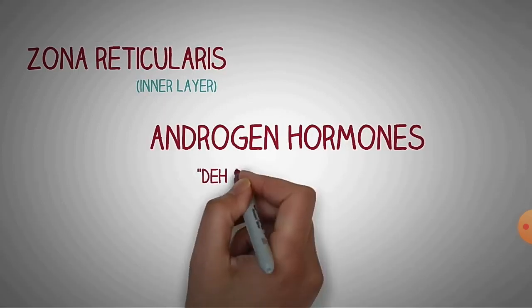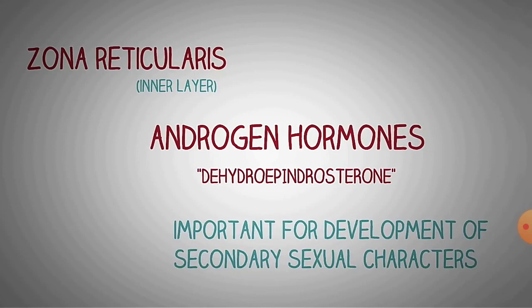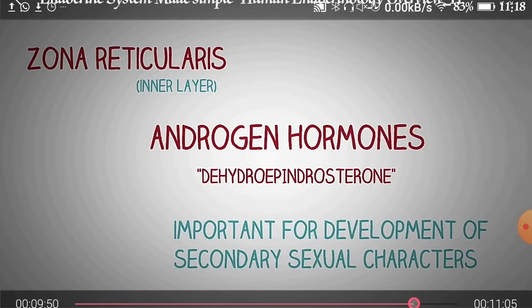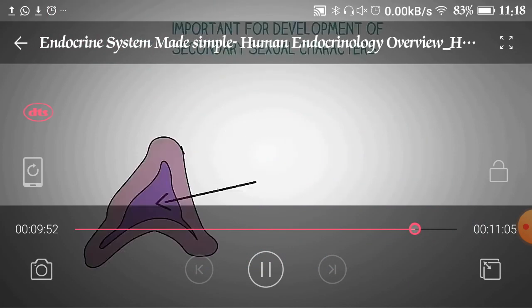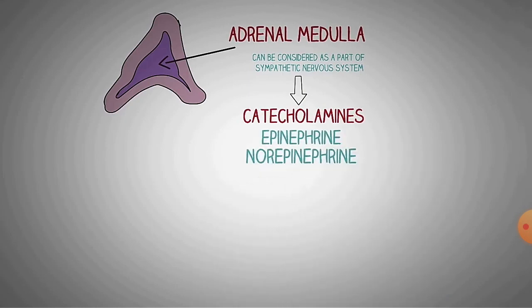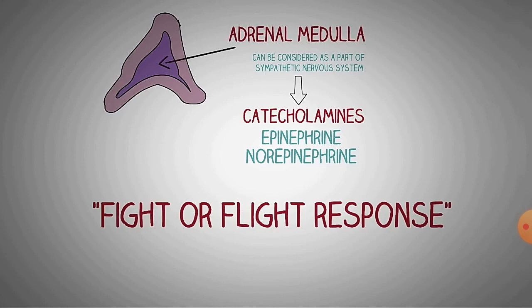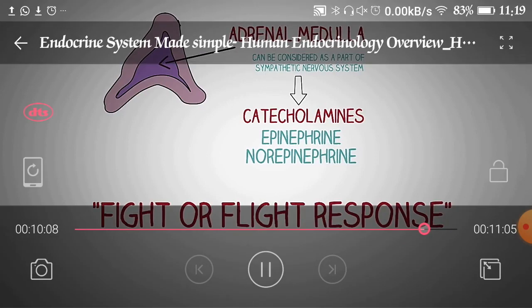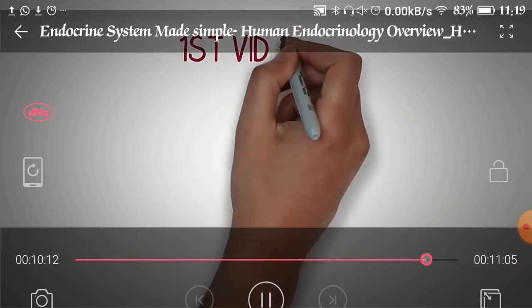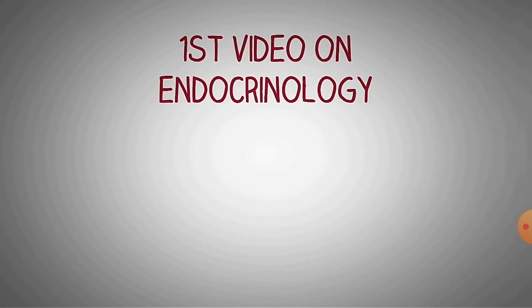The next part is zona reticularis, the innermost layer, which secretes androgens — specifically dihydroepiandrosterone (DHEA) — important for development of secondary sexual characters in males. The adrenal medulla, the innermost part, can be considered part of the sympathetic nervous system and releases catecholamines: norepinephrine and epinephrine. They are responsible for the fight-or-flight response in accompaniment with the autonomic nervous system. Thank you very much for watching; we will see you in the next lecture.